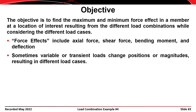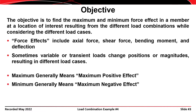Sometimes variable or transient loads change positions or have different magnitudes, resulting in different load cases. When we say maximum, that generally means the maximum positive effect; when we say minimum, that generally means the maximum negative effect. So if we have two loads of 100 kips and 150 kips, we look at 150 as the maximum. If we have negative 100 and negative 150, we look at negative 150 as the maximum negative.